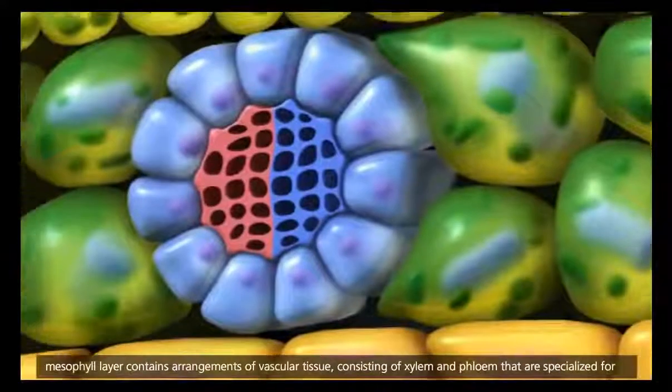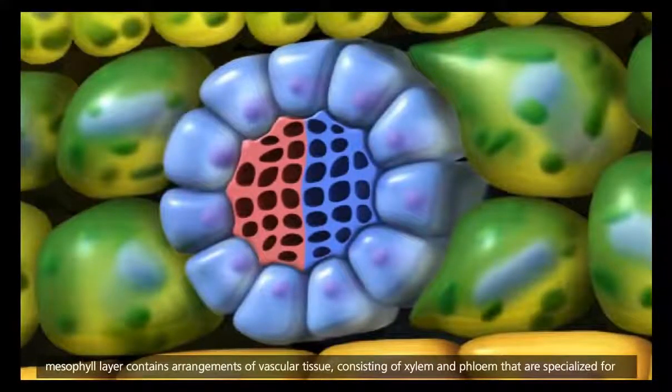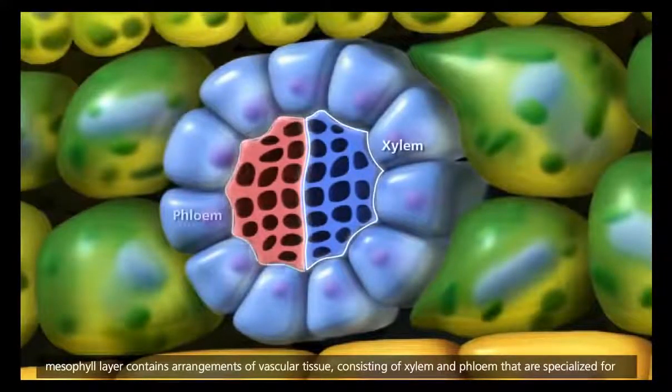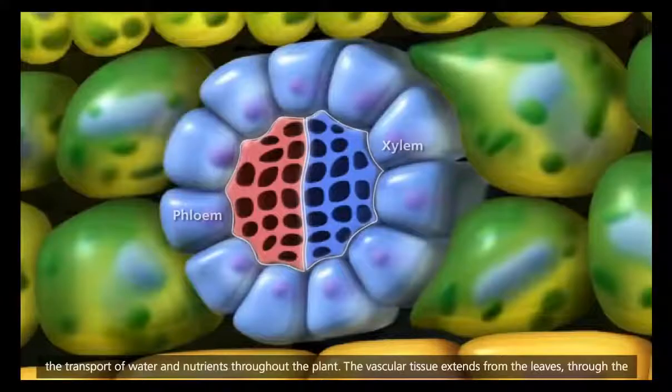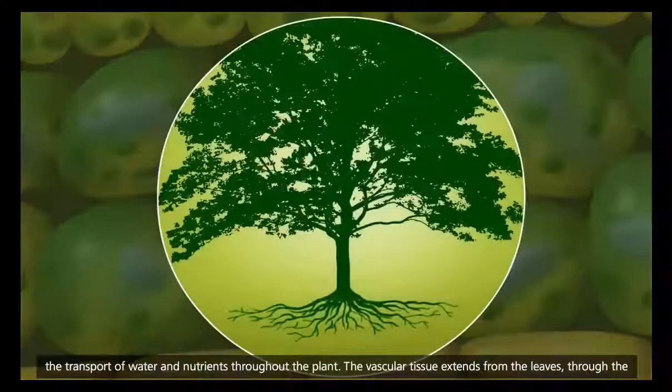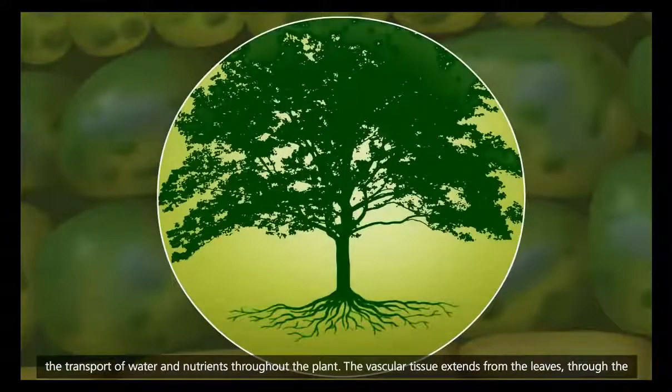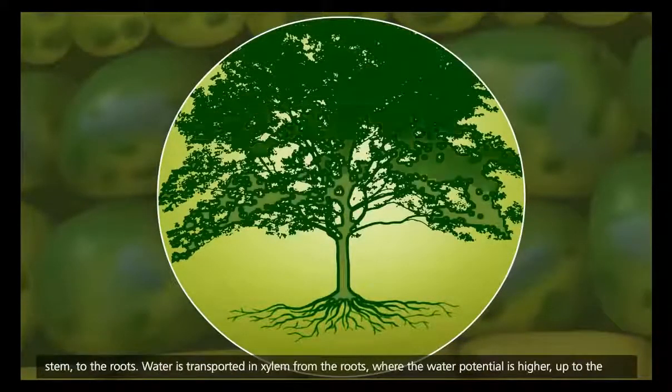The spongy mesophyll layer contains arrangements of vascular tissue, consisting of xylem and phloem, that are specialized for the transport of water and nutrients throughout the plant. The vascular tissue extends from the leaves, through the stem, to the roots.